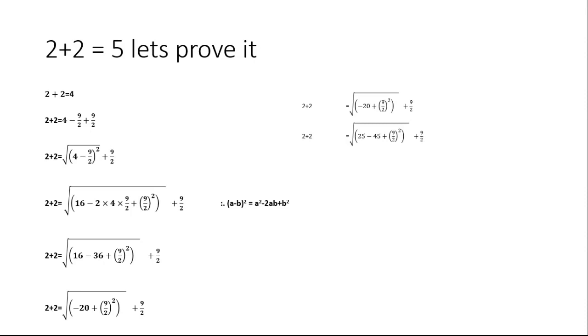We know that 25 minus 45 is equal to minus 20, so we put the value of minus 20 as 25 minus 45.